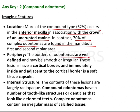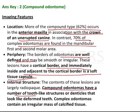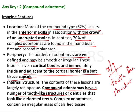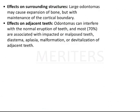Odontomas have a very well-defined cortical border, and immediately inside adjacent to the cortical border is the soft tissue capsule. The internal structure of compound odontoma shows a number of tooth-like structures that look like deformed teeth, whereas complex odontomas show an irregular mass of calcified tissue.